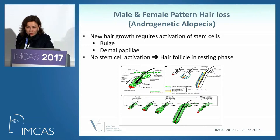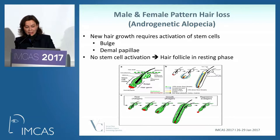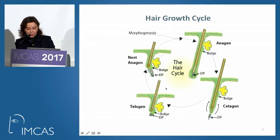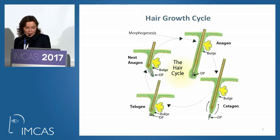For female pattern hair loss, we don't know exactly how it works — the exact pathogenesis is unclear. What we do know is that new hair growth requires activation of stem cells, and these stem cells are present in two main areas: the bulge and the dermal papilla.